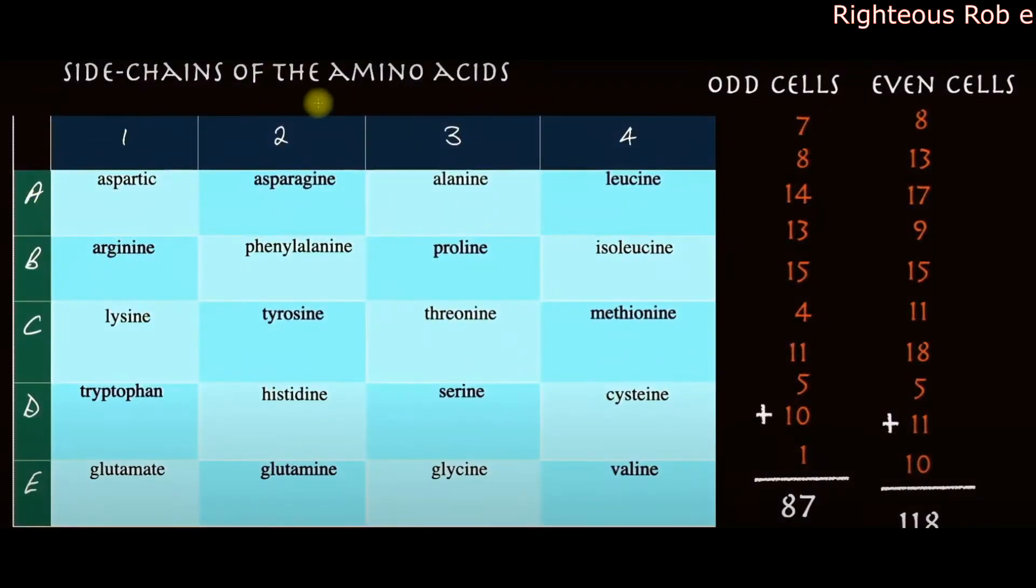The side chains of amino acids, when creating proteins: the odd cells sum total 87, and the even cells have a sum total of 118, which is Jesus Christ using the English septenary cipher, having a letter value of 59. 59 times 2 is 118, equaling the even cells of the amino acids matrix.